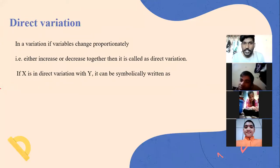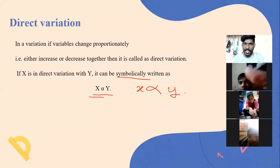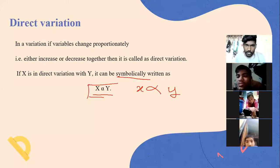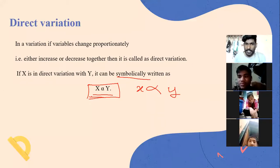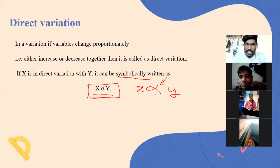If x is in direct variation with y, then symbolically we write it as x directly proportional to y, using the proportionality symbol. We say 'x is directly proportional to y.' This proportionality symbol is used whenever x and y are in direct proportion.